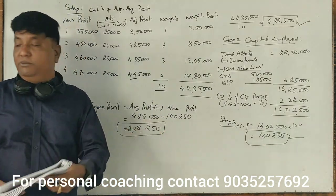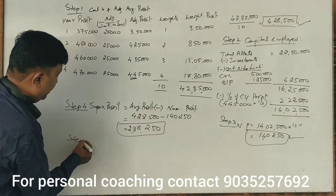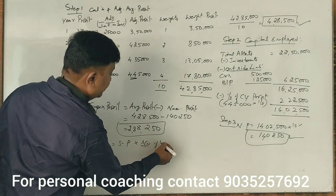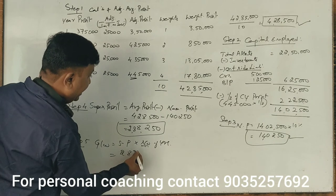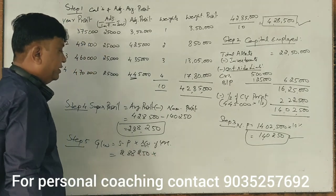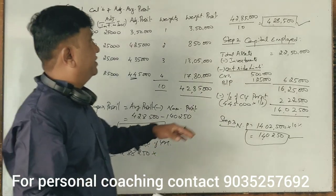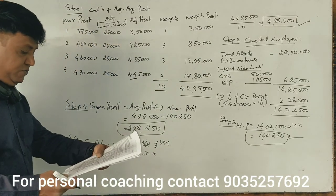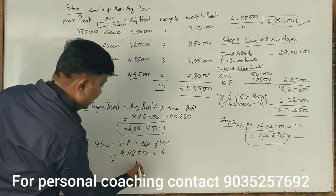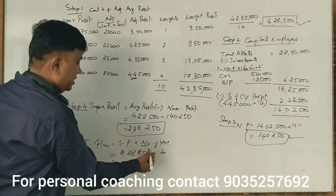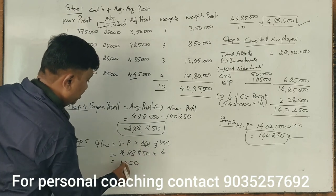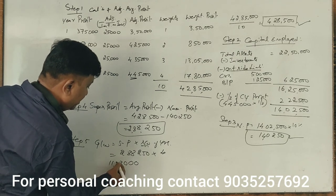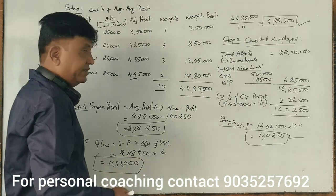Step 5: Goodwill = super profit × number of years purchase. Total weighted profit is ₹42,85,000; weighted average profit (average profit) = ₹4,28,500. Goodwill = ₹2,88,250 × 4 years = ₹11,53,000. That is the answer.